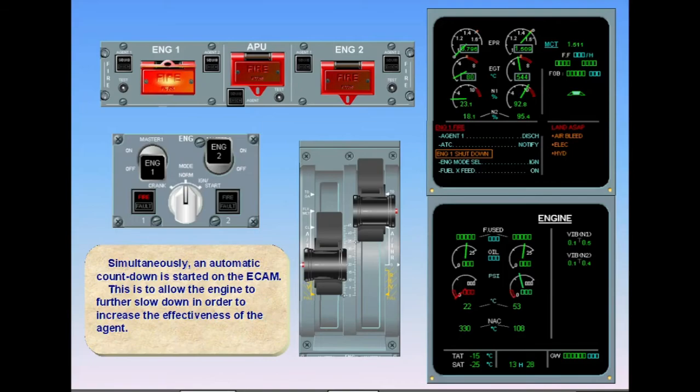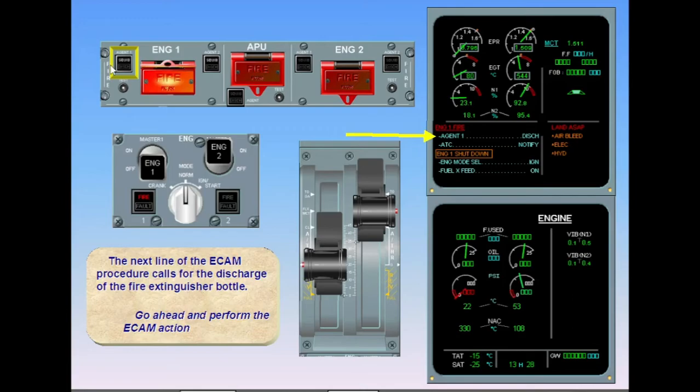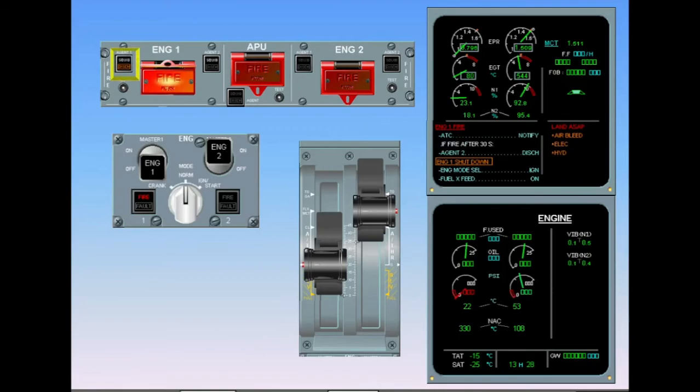The next line of the ECAM procedure calls for the discharge of the fire extinguisher bottle. Go ahead and perform the ECAM action. The discharge light illuminates on the Agent 1 push-button. This means that the fire extinguisher bottle is depressurized.